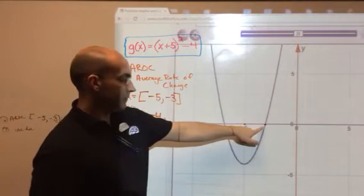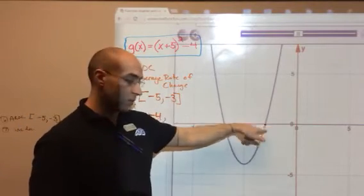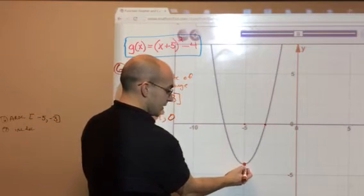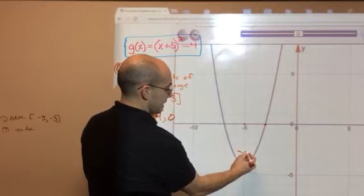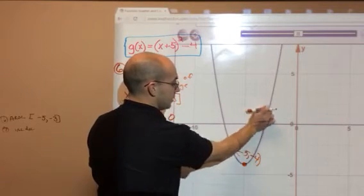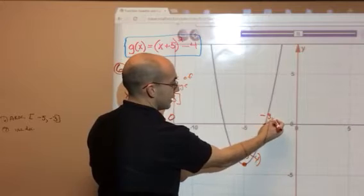And at negative 3, f of x is 0 because it's on the x-axis. So my points are actually right here, which is negative 5 comma negative 4, and right here, which is negative 3 comma 0.